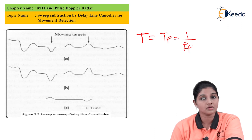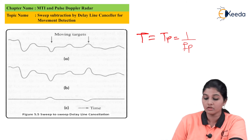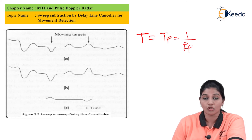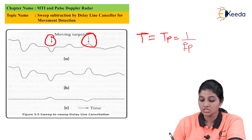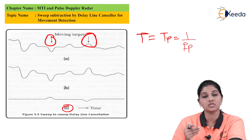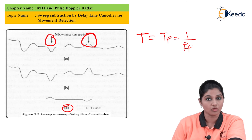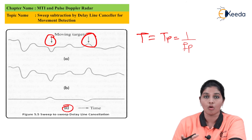Let's consider the diagram to understand the operation of the delay line canceller in detail. In this diagram, figure A indicates the moving target having two directions or two positions which are indicated by arrows. The signal is converted into a unipolar video, indicated by figure C, and then converted again into the analog signal by using the digital to analog converter. This is how the MTI radar delay line canceller operates.